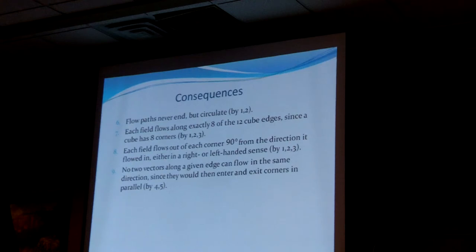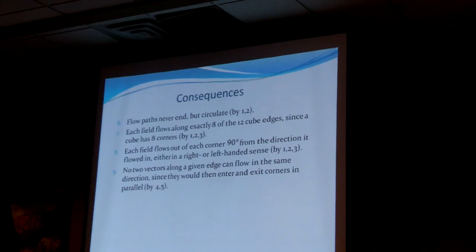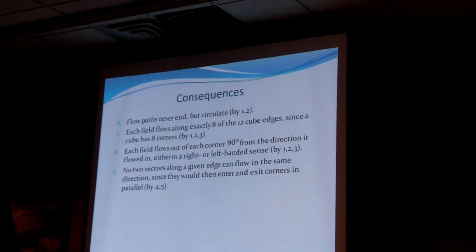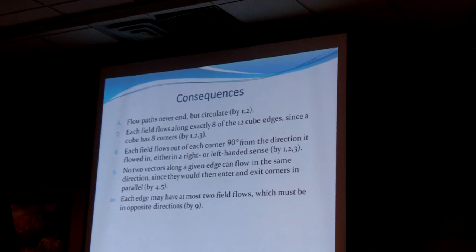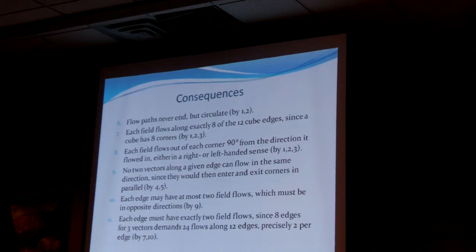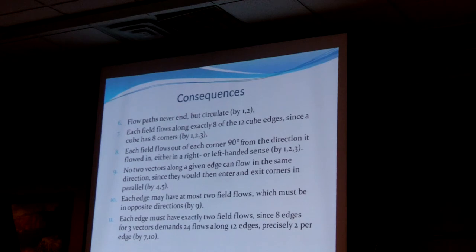No two vectors along a given edge can flow in the same direction, otherwise they would enter and exit corners in parallel. Each edge may have at most two field flows, which must be in opposite directions. There are 24 flows total — three vectors each flowing along eight edges — and there are 12 edges, so the most I can have on any edge is two. The least I can have is two. I've got to have exactly two.